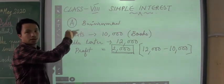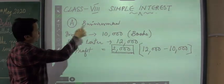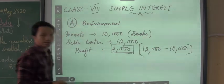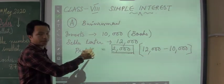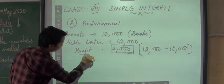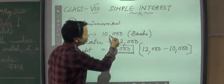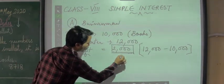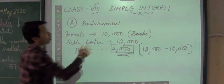For Class 8, the new topic is simple interest. Let's say there is a businessman named A. He invests ten thousand rupees in buying books and later sells the books at twelve thousand rupees. We can see that he is earning a profit of two thousand rupees — that is twelve thousand (selling price) minus ten thousand (invested). This two thousand is the profit, and we need to understand this concept to understand simple interest.